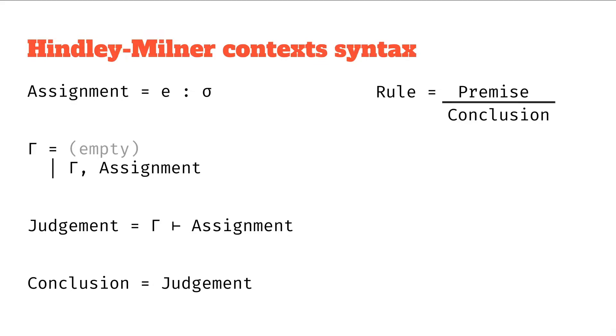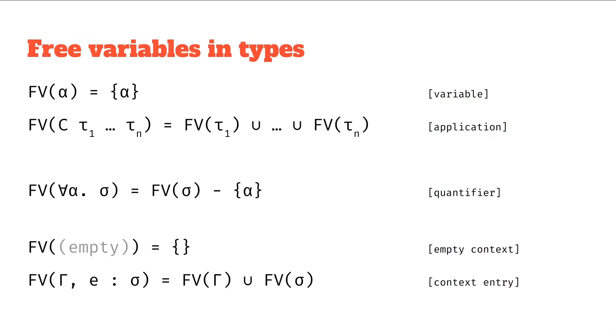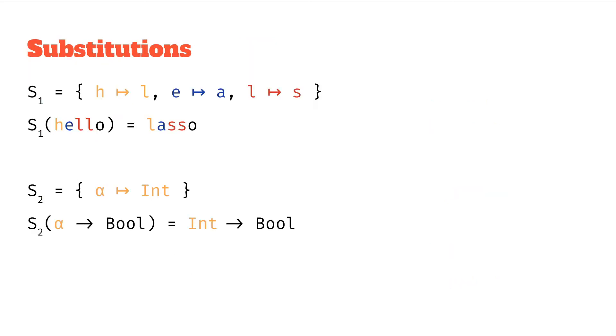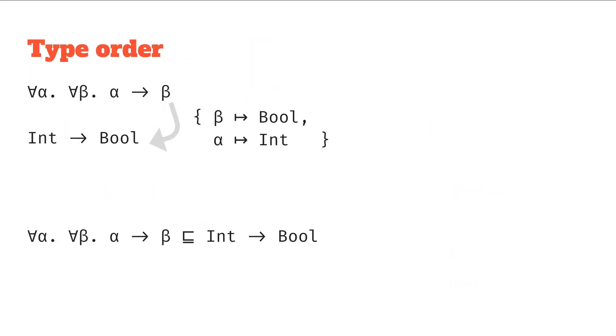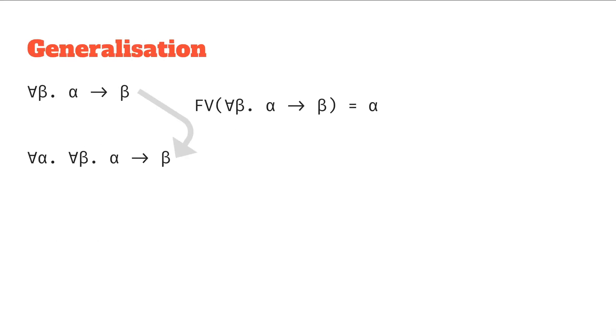Rules are the real thing we're going to be exploring in this series. We've also looked at defining the free variables in types and in contexts as well as substitutions and type order, and from type order we also get instantiation and generalization.